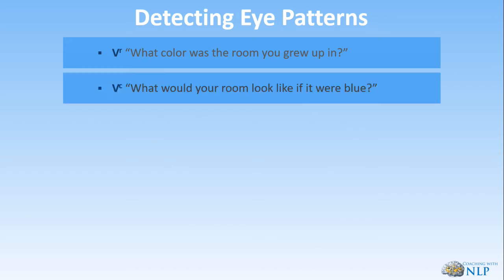For visual construct, I could ask: 'What would your room have looked like if it was blue?' — obviously unless it was blue, that wouldn't make sense. Or if they said their room was white: 'Okay, imagine it was pink with blue polka dots — what would that look like?' Then I'd expect their eyes to go up to their visual construct.